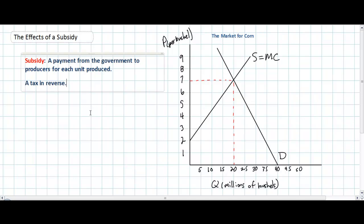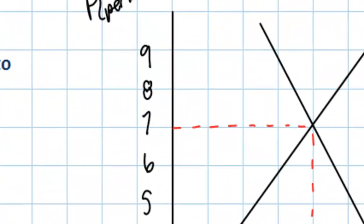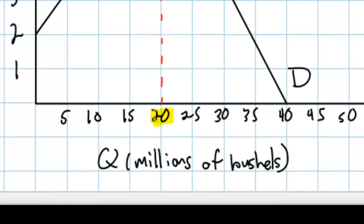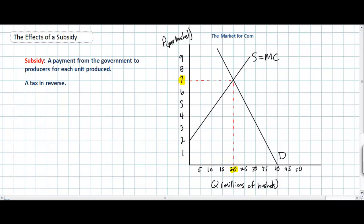Let's look at the market for corn on the right. As we can see, without any government intervention whatsoever, the market for corn will lead to an equilibrium price of $7 per bushel and 20 million bushels of corn will be produced in the United States. Let's examine the effect of a $2 per bushel subsidy.